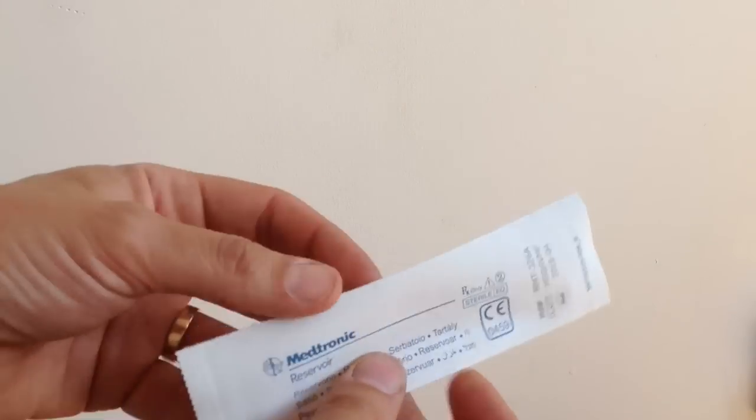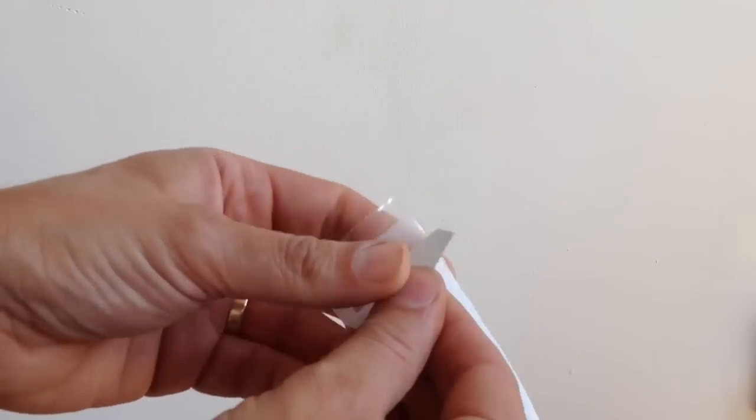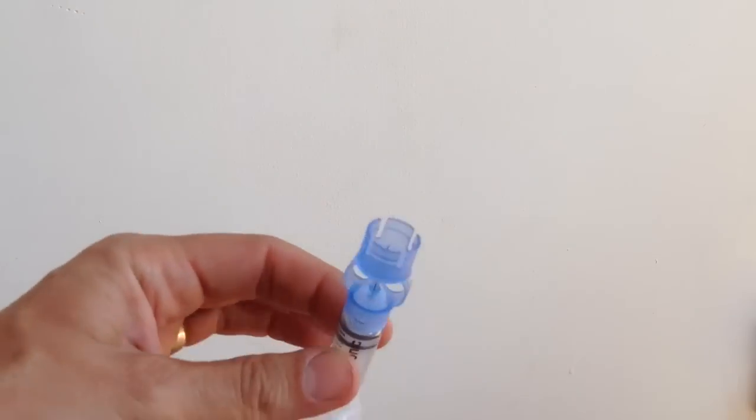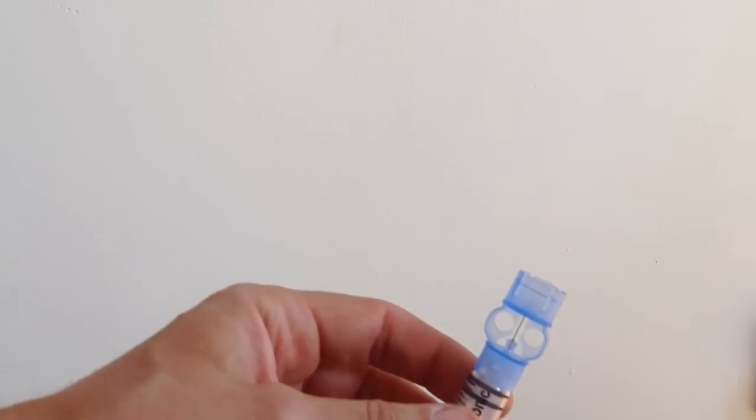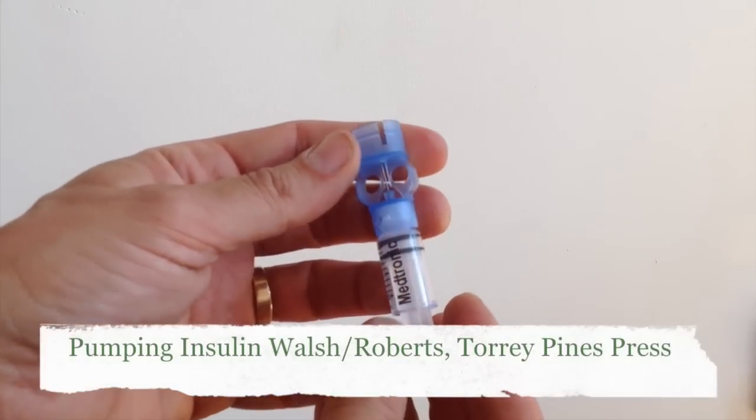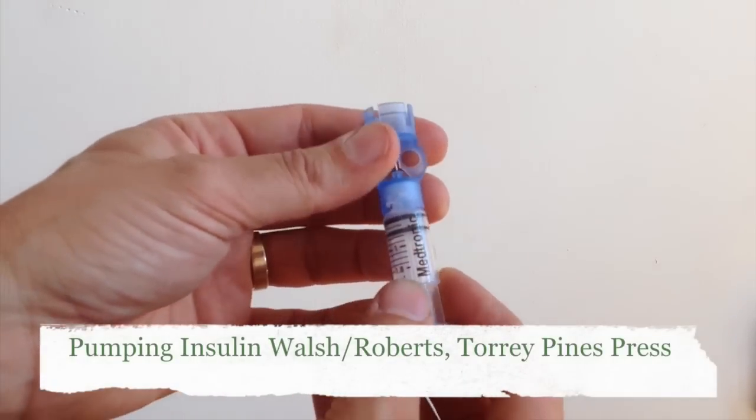So the reservoir comes like this from Medtronic, you just unpeel the end there, and there's the little filler thing. Now, I think it was from Pumping Insulin, John Walsh and Ruth Roberts, that the suggestion came that the first thing it's useful to do is to just work the plunger up and down to the level at which you're going to fill it.